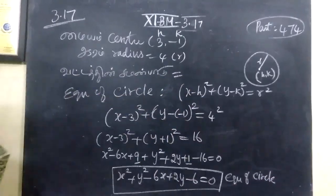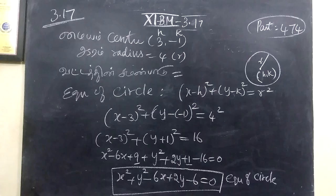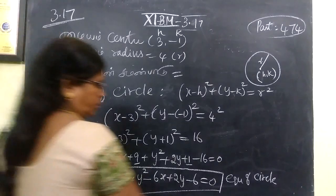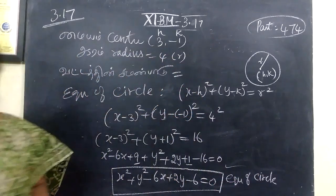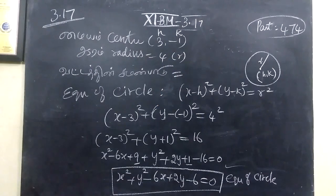So, x squared plus y squared minus 6x plus 2y minus 6 equals 0 is the equation of the circle. This answer is correct. Thank you.